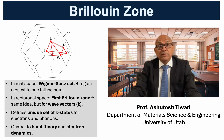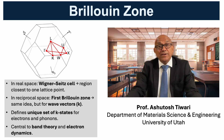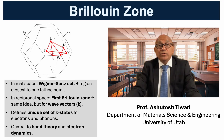In real space, the Wigner-Seitz cell is the region that is closer to one lattice point than to any other. In reciprocal space, we apply exactly the same construction, but now to the reciprocal lattice, and the result is called the first Brillouin zone.